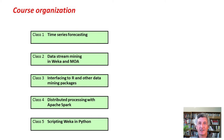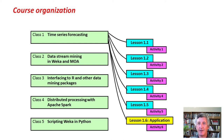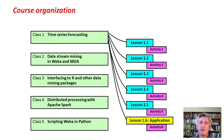The course is organized just like the other courses. There are five classes, and each class corresponds to about a week. The first class is on time series forecasting, then data stream mining, interfacing to R, distributed processing, and Python scripting. Within each class there are six lessons. Each lesson is a brief YouTube video of five to ten minutes, like this one, followed by an activity where you actually get to use WEKA to do things yourself. This is where you do your real learning — you don't really learn from me talking to you, you learn from actually doing stuff yourself.